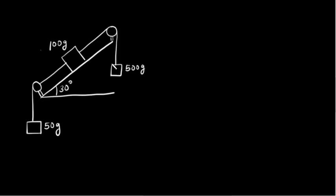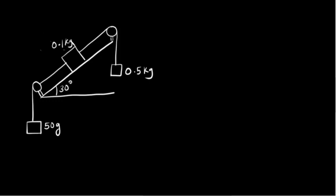We have to find out the acceleration of this 500 gram mass. This is 100 gram, this is 50 gram, and this is 500 gram. Let's write it in the form of kilograms: this is 0.1 kilogram, this is 0.5 kilogram, this is 0.5 kilogram, this is 0.1 kilogram, and this will be 0.05 kilogram. Now let's draw the free body diagram of the 0.5 kg mass.